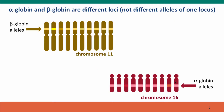We can expand that by thinking about allelic relationships. On chromosome 11, we have beta globin, and there are many different alleles of beta globin in the human population. Similarly, the alpha globin on chromosome 16 comes in many different alleles. These different versions of alpha globin are alleles, and the different versions of beta globin are alleles — but alpha globin and beta globin are different loci.